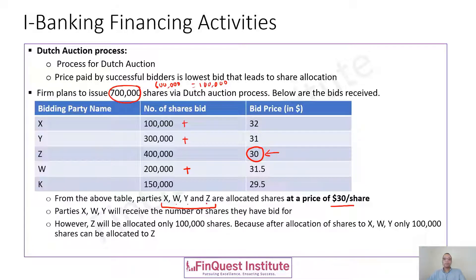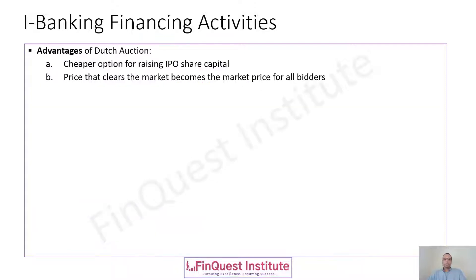This is the Dutch auction process in brief. A couple of advantages: first, it is cheaper than raising capital through an IPO. In an IPO, you must hire the services of a merchant banker whose fees can be high — depending on whether you go for underwriting or a best-effort basis — whereas the cost for a Dutch auction is lower from the company's perspective.